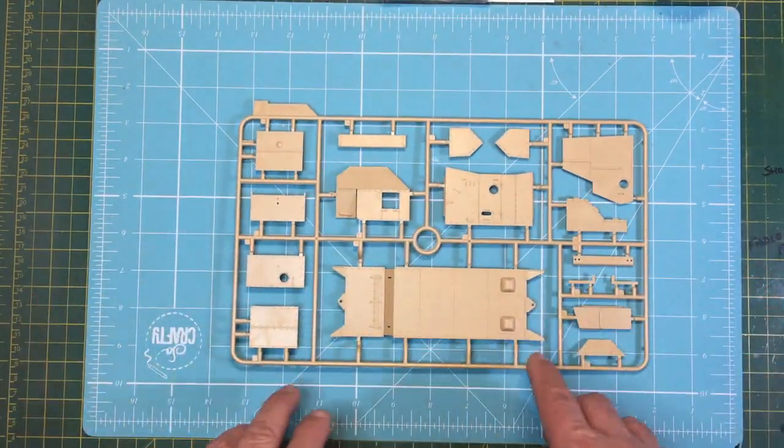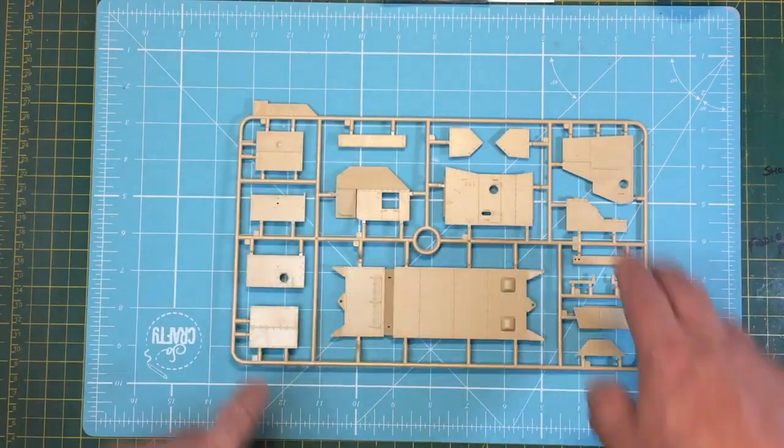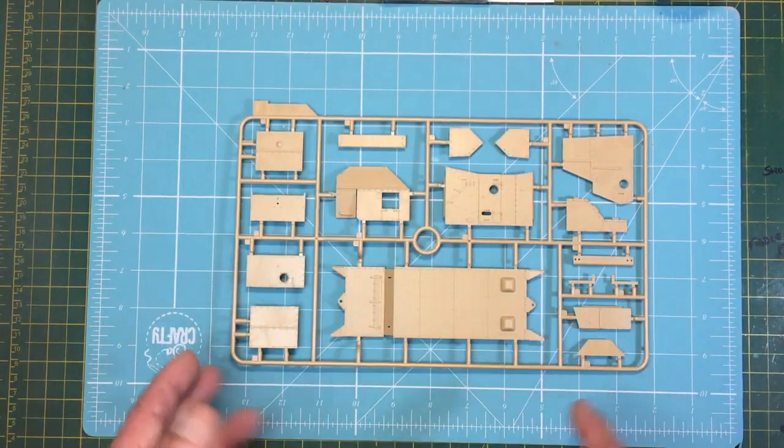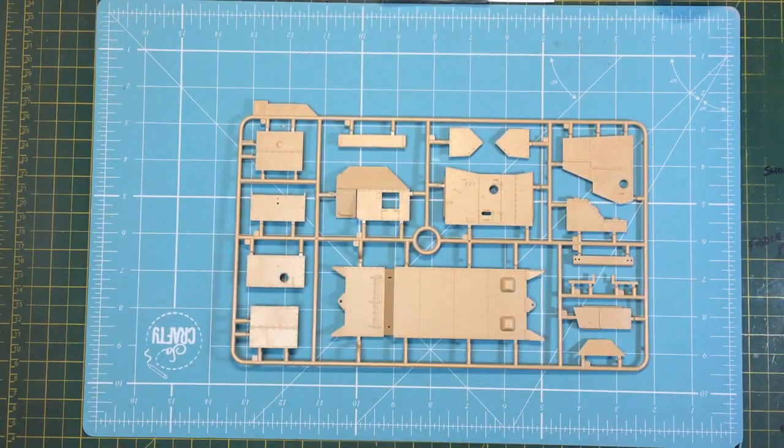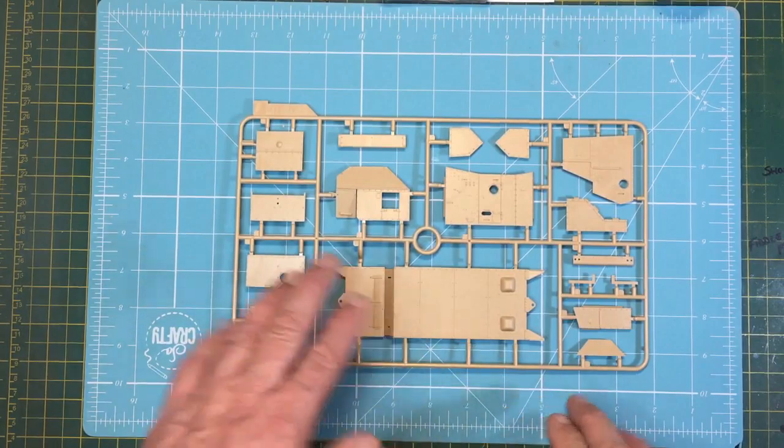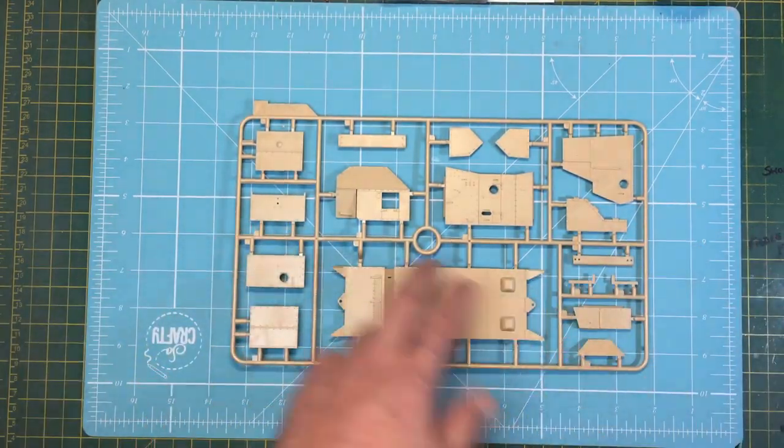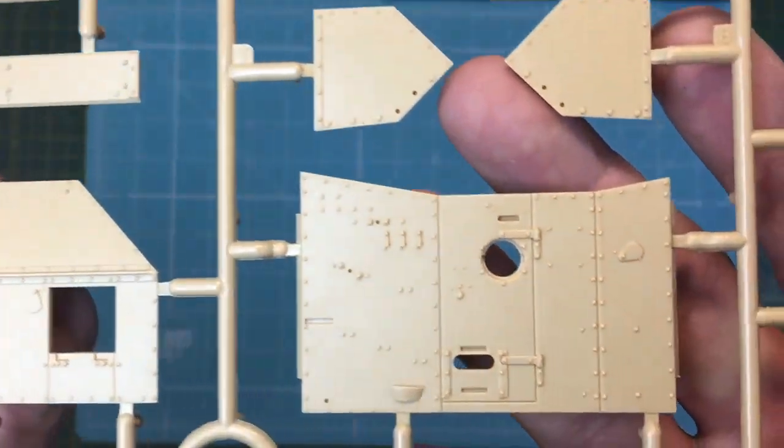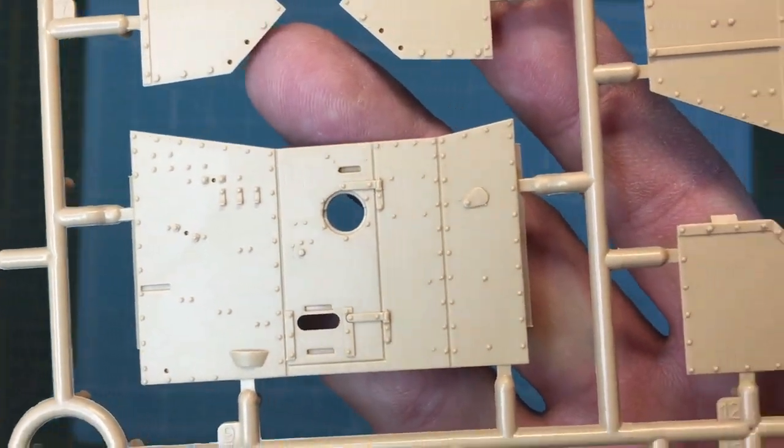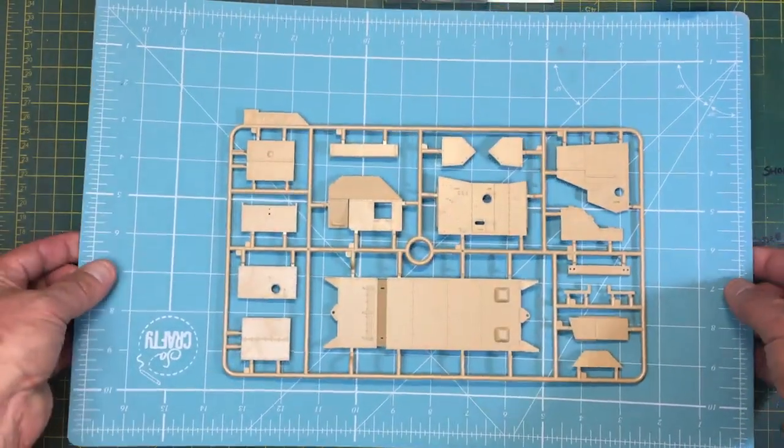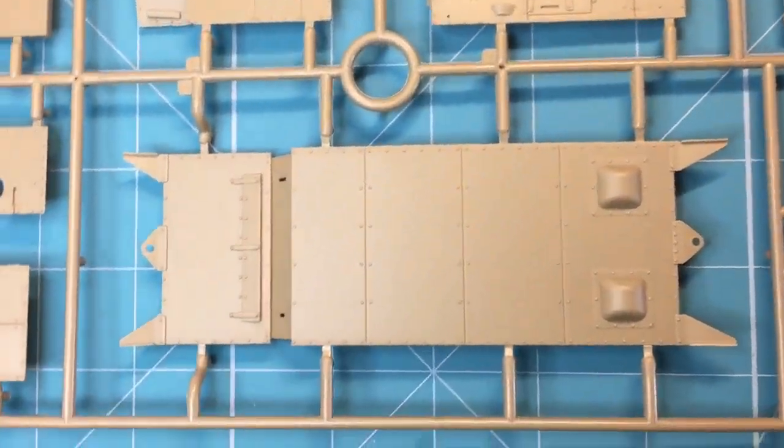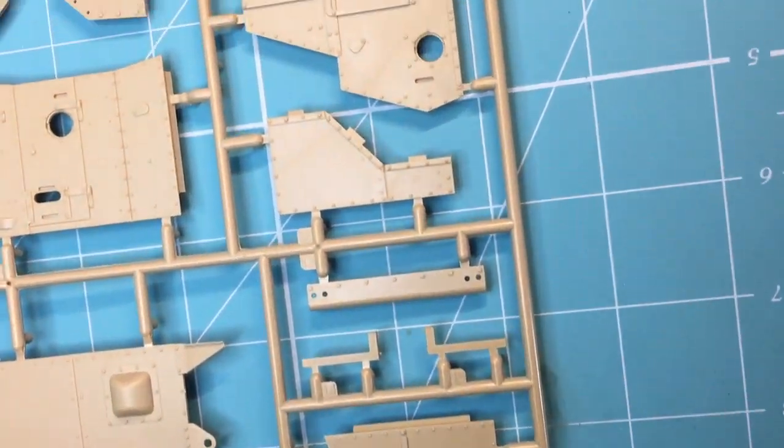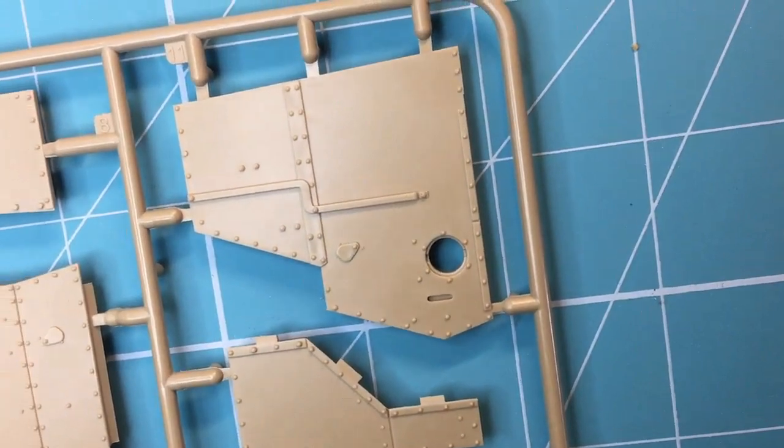This is sprue A. You can see these are the hull parts, so we've got the base here and the sides and ends and everything. You're obviously going to build up the hull, which I always enjoy because it gives you more of a model to build. And because everything's molded as a flat panel, you always get brilliant surface detail. Let's have a look at this surface detail. As we can see, it's really really nice.